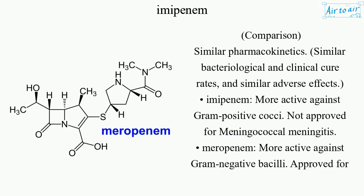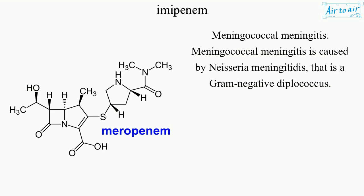Comparison: Similar pharmacokinetics, similar bacteriological and clinical cure rates, and similar adverse effects. Imipenem is more active against gram-positive cocci and is not approved for meningococcal meningitis. Meropenem is more active against gram-negative bacilli and is approved for meningococcal meningitis, which is caused by Neisseria meningitidis, a gram-negative diplococcus.